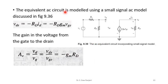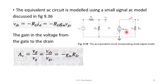Using the first small signal AC model — gate replaced by open circuit, drain replaced by a voltage-dependent current source — we can see that VDS equals −RD·ID. Since ID = Gm·VGS, substituting gives VDS = −RD·Gm·VGS. The voltage gain AV = VDS/VGS = −Gm·RD.